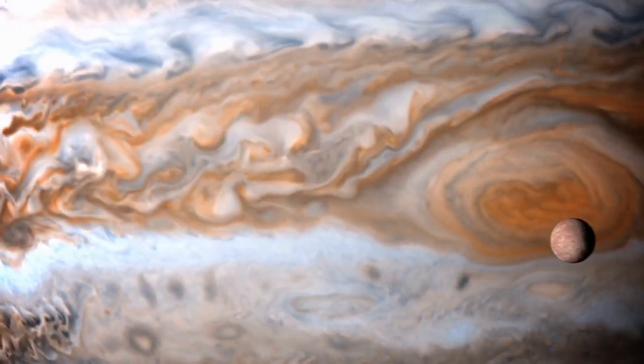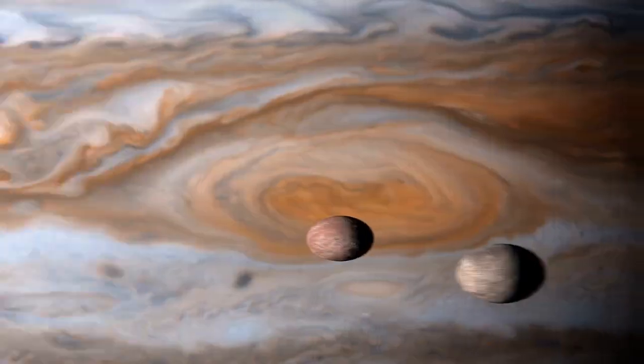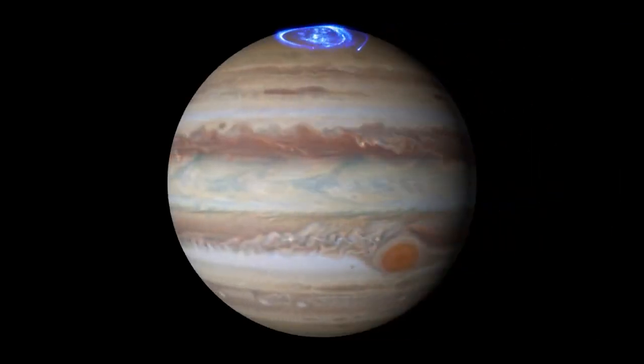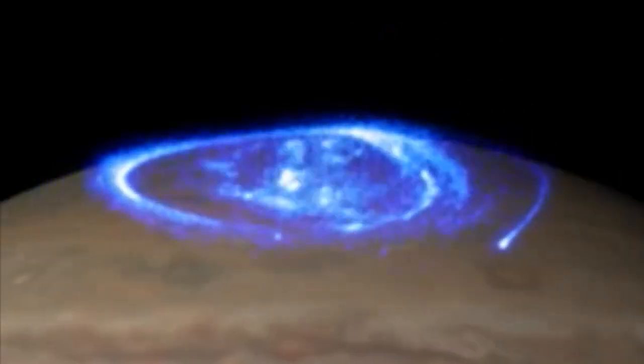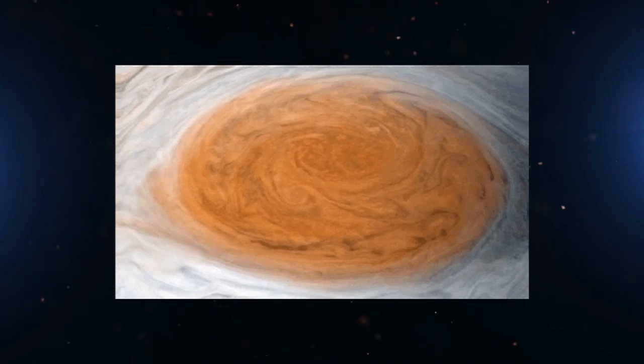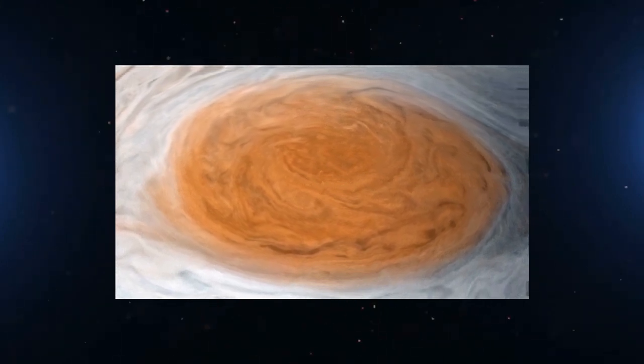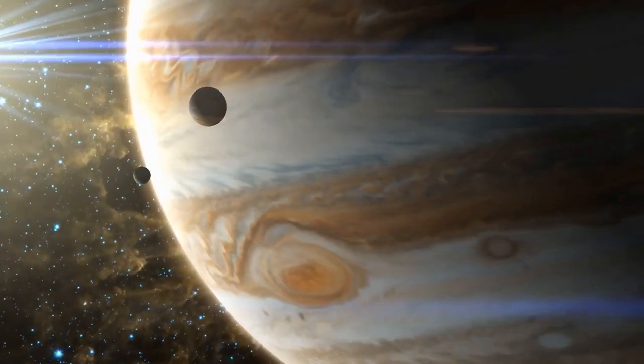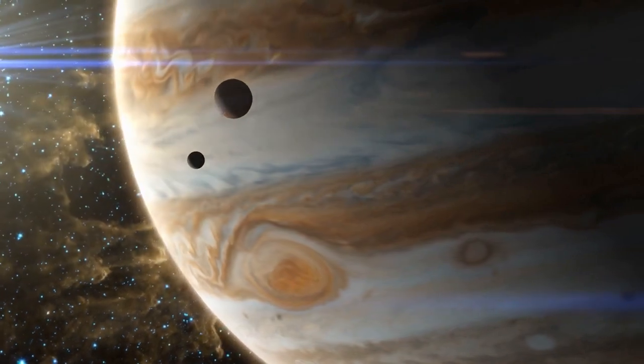It also shows new details of Jupiter's auroras and storm systems. Above, on the right, Webb's picture of Jupiter shows that the planet's great red spot, a huge storm that has been going on for hundreds of years, is so bright from reflected sunlight that it looks white.